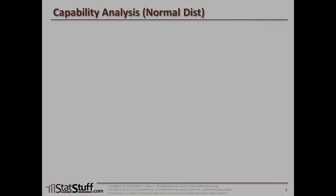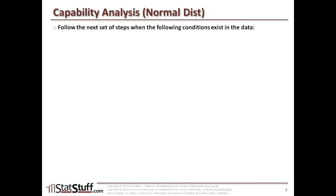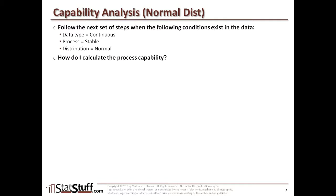Now let's explore how you can begin to run the capability analysis for normal distributions. Before you run this testing, you need to make sure that certain conditions exist within your data. First, the data type should be continuous, the process should be stable, and the distribution should be normal. As long as your data is already set up like that and you've validated those, you can move on to the next step of calculating process capability.